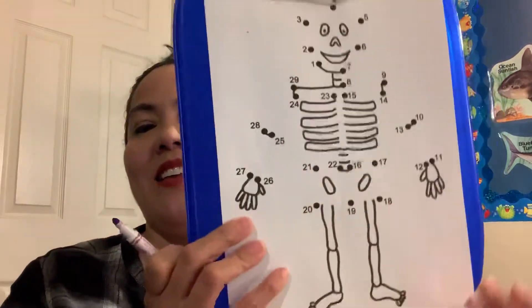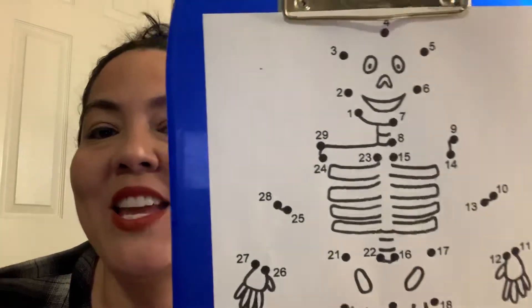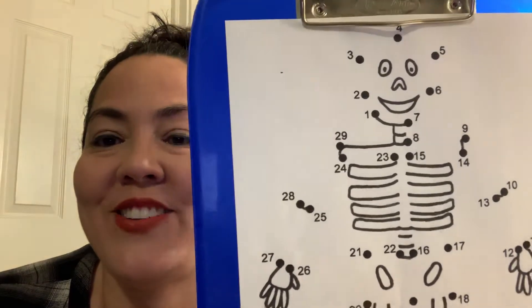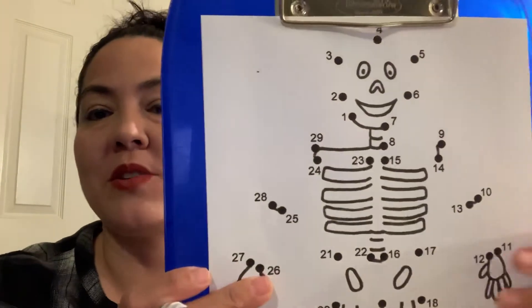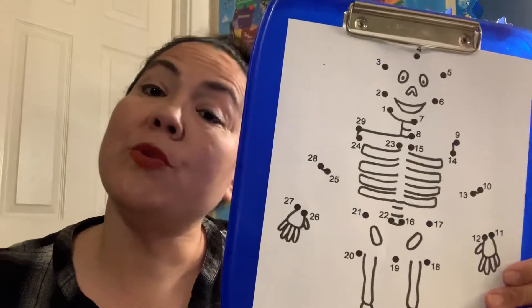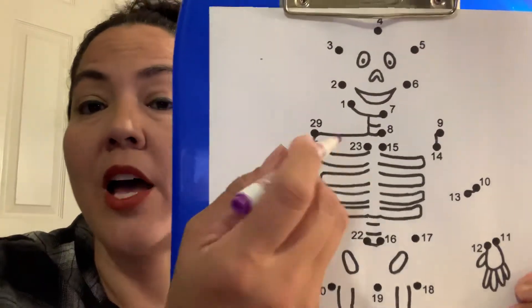So we get to make something fun today. He looks like he's got some bones, but he's missing some. It's our dot to dot. Are you guys ready to do this with me? You guys are so smart. I know you know your numbers. Now, do we do this fast or do we do it slow? That's right. We do it slow.